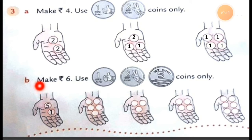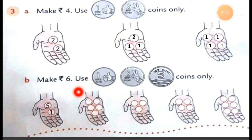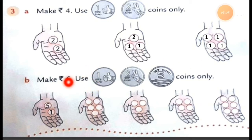Now let's move to Question B: Make rupees 6. Always look for the instruction first. The instruction is: Make rupees 6. Which coins can we use? We can use the coin of rupee 1, the coin of rupees 2, and the coin of rupees 5. We can use only these 3 coins to make rupees 6.